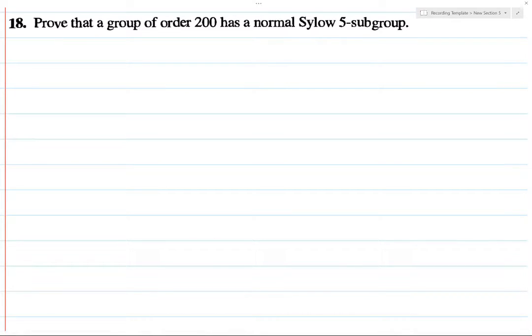Here's another one of the easier Sylow theorem problems, and so we're going to let G be a group of order 200, which is 2 cubed times 5 squared. We want a normal Sylow 5 subgroup.